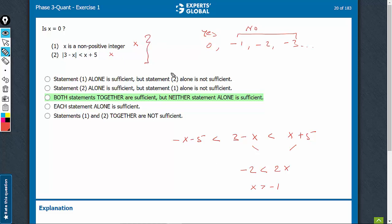On combining, what do we get? The only case left is that x is equal to 0. That's the only condition that satisfies this condition also, and condition in statement 1 also.